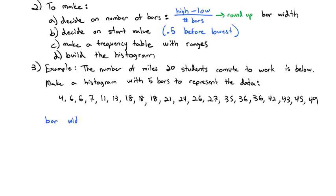So for our bar width we need to take the high minus the low divided by the number of bars. So the high is 49 and the low is 4. 49 minus 4 divided by the 5 bars is 9. Now it's exactly 9 so I have to round that up to 10 is my width. Always round up to the next whole number otherwise your last values won't be included in the last bar.